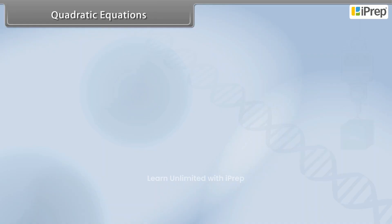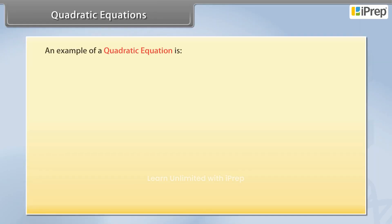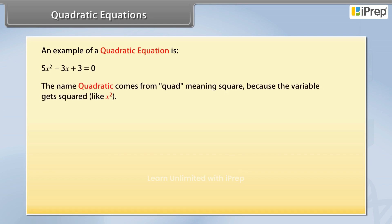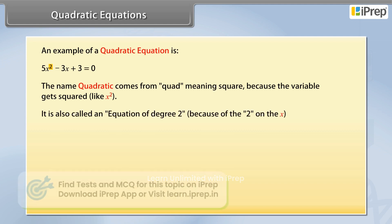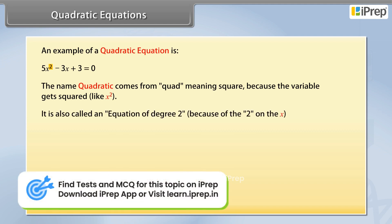Quadratic Equations. An example of a quadratic equation is shown here. The name quadratic comes from quad, meaning square, because the variable gets squared, like x squared. It is also called an equation of degree 2, because of the 2 on the x.